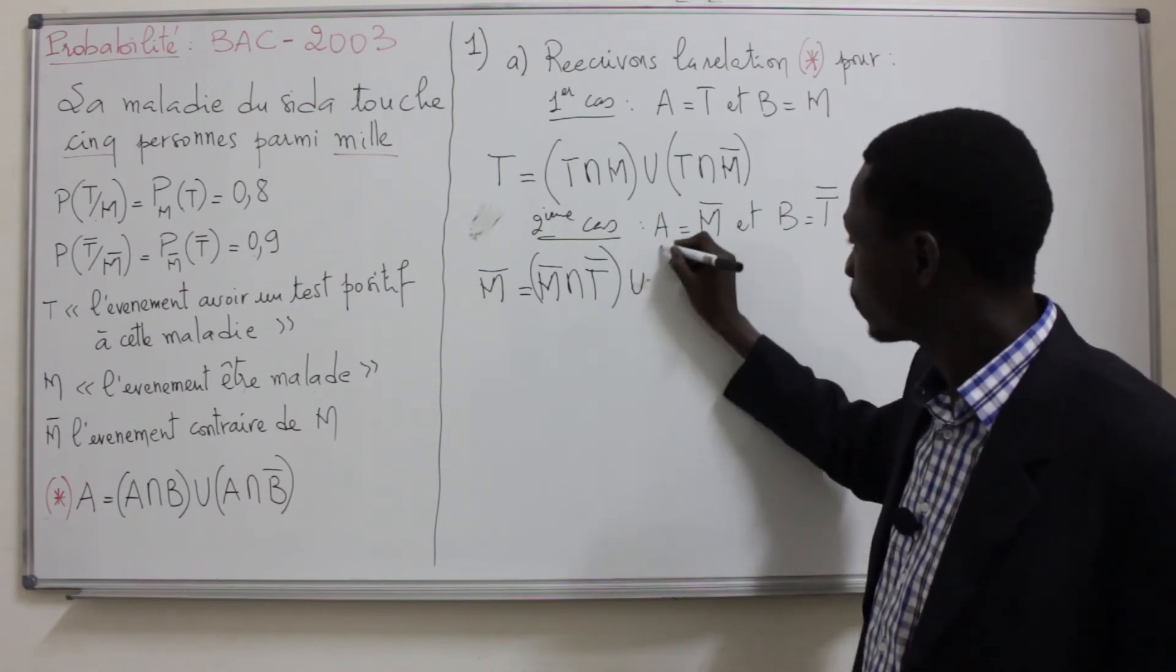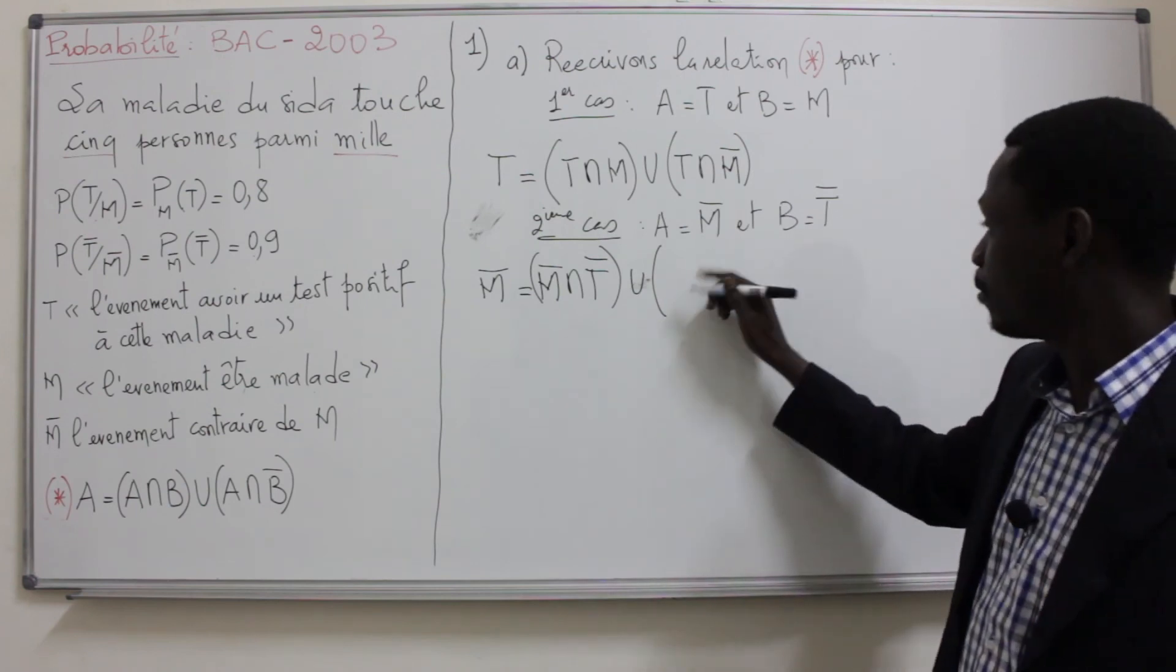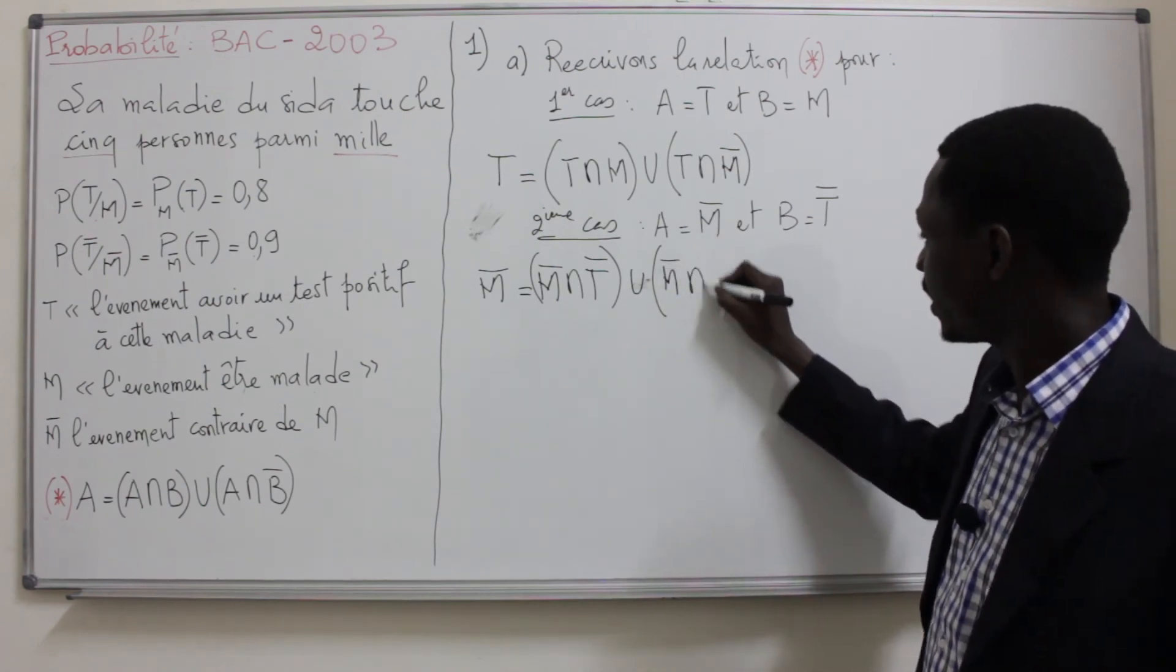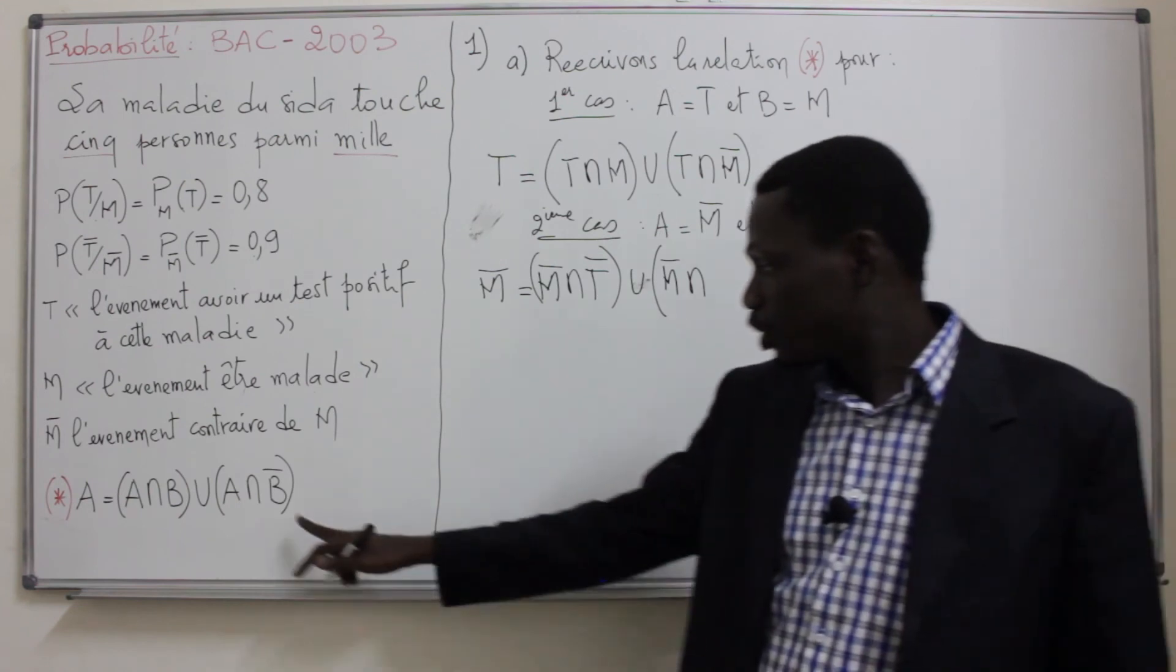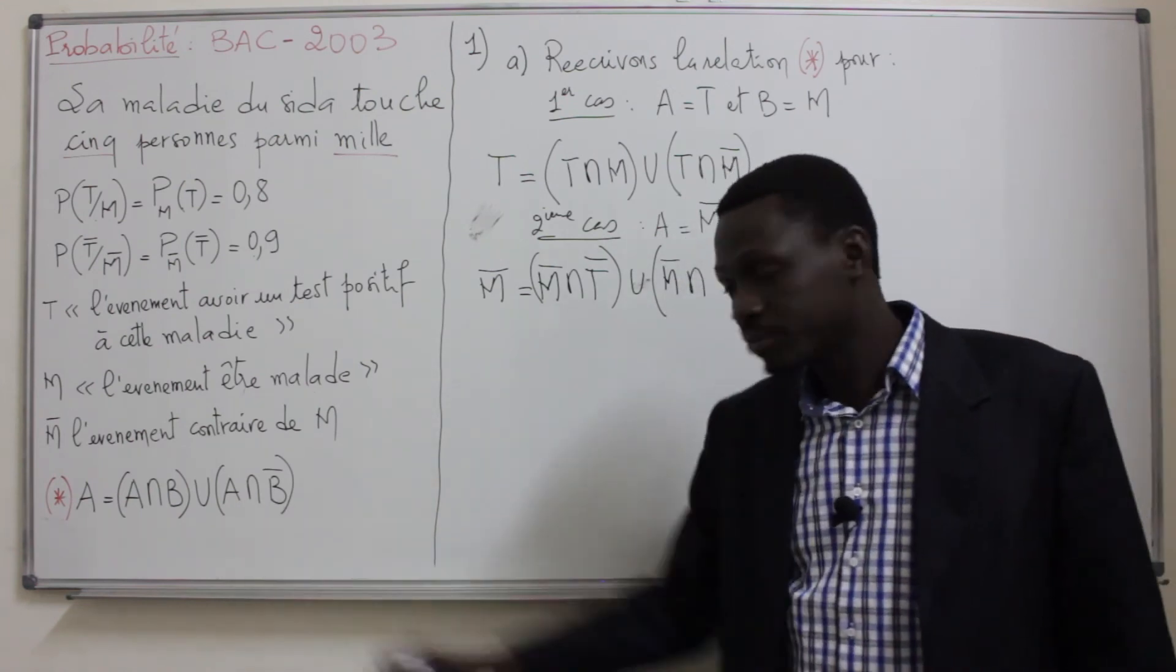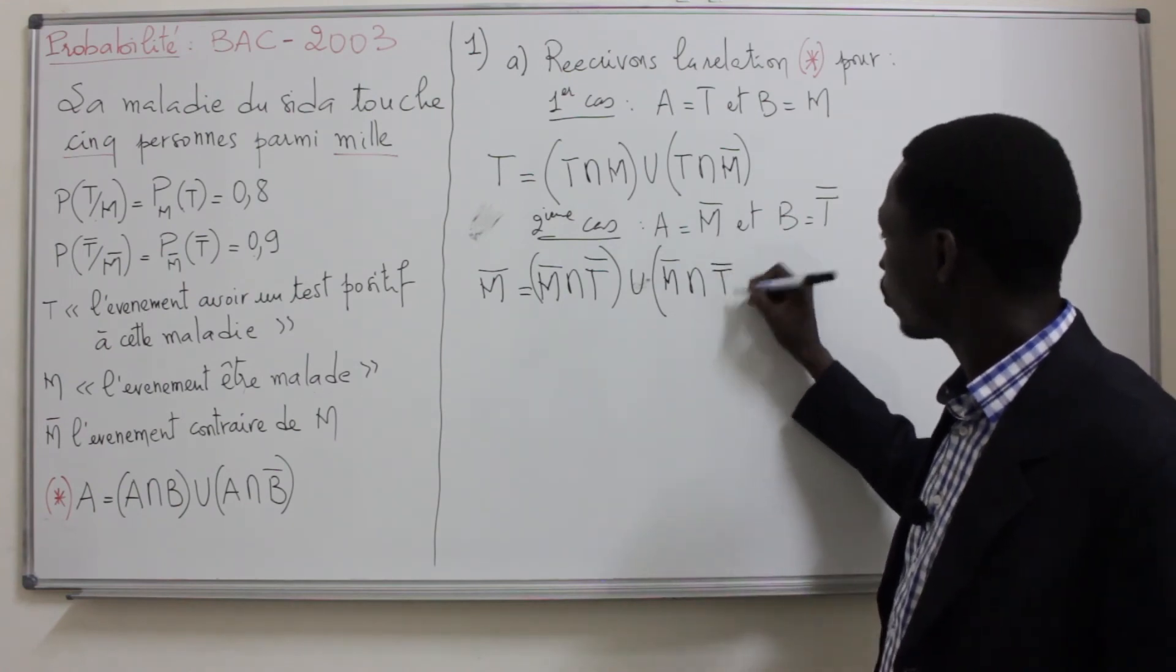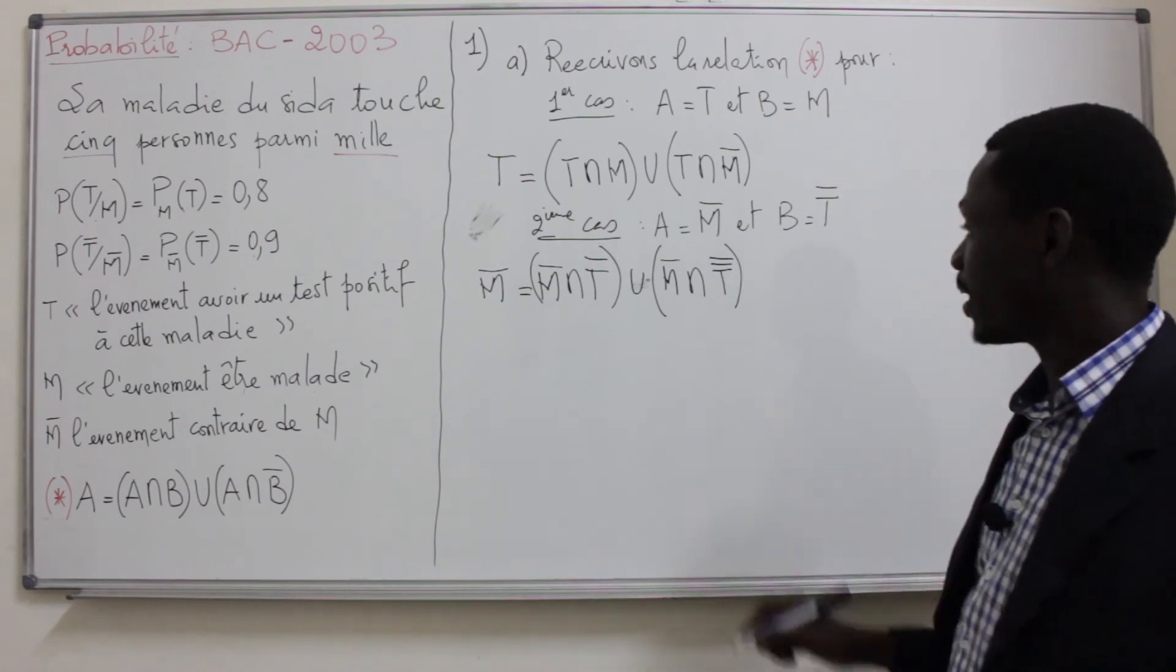union M̄ inter - le B, on le remplace par T̄. Sauf qu'ici on a B̄. Donc le B seulement c'est T̄. Comme on a B̄, donc on aura T̄̄.